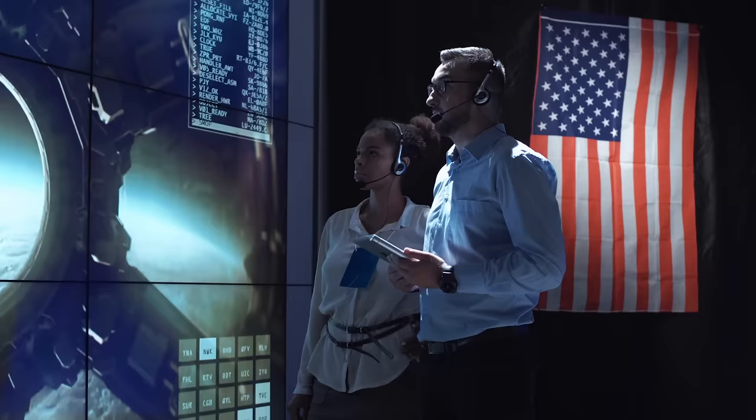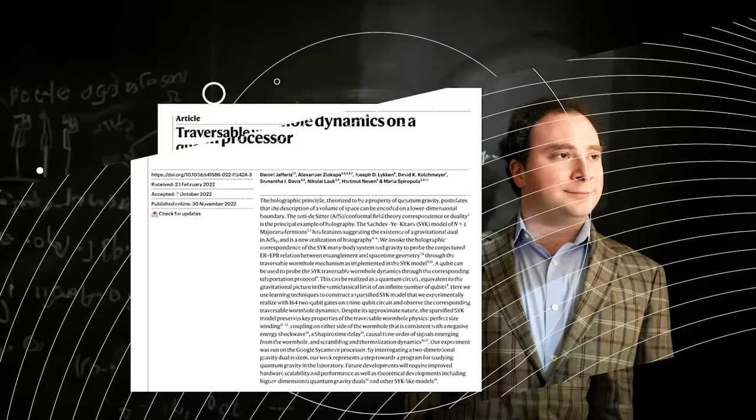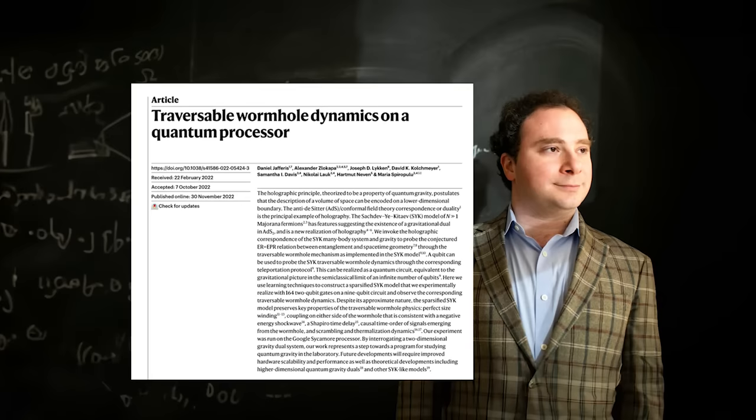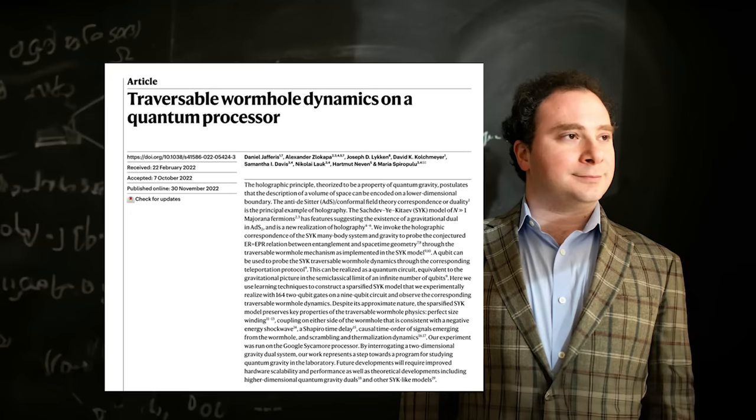The initial paper that was published in November of 2022 by Jafferis et al. was focused around using quantum computers to test the ER equals EPR conjecture. It's also important to note that the computer was being used to run a simulation, not a genuine attempt to create wormholes. They weren't actually creating wormholes any more than your PlayStation created a wormhole any time you fired the Portal gun.